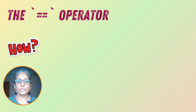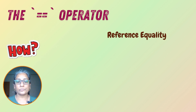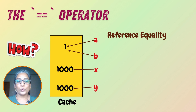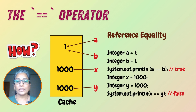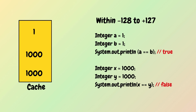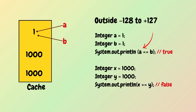In Java, the equal-to operator checks for reference equality when used with objects — it checks whether two references point to the same memory location. Integers a and b each with value 1 are within the minus 127 to plus 128 range and are cached, so a == b evaluates to true. Integers x and y each with value 1000 are outside that range and are not cached, so x and y refer to different objects and x == y evaluates to false.